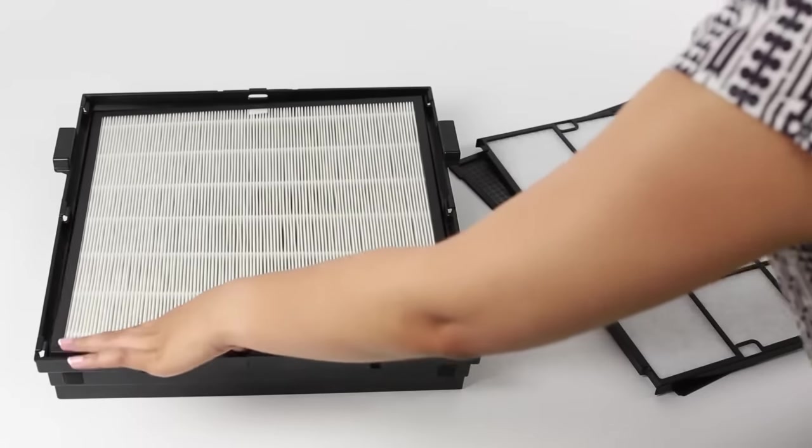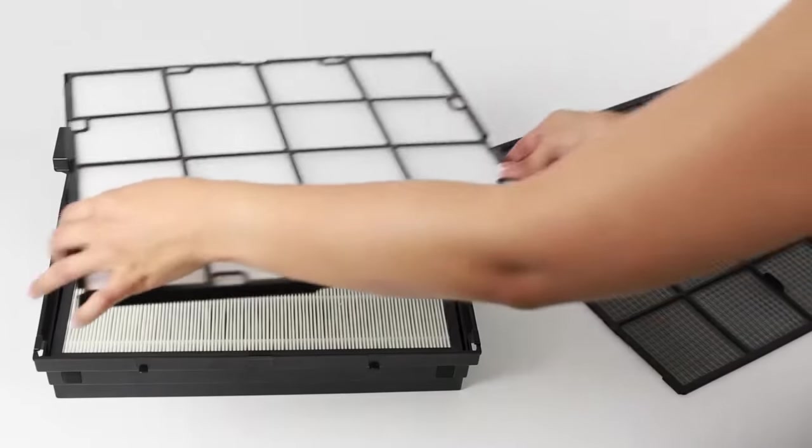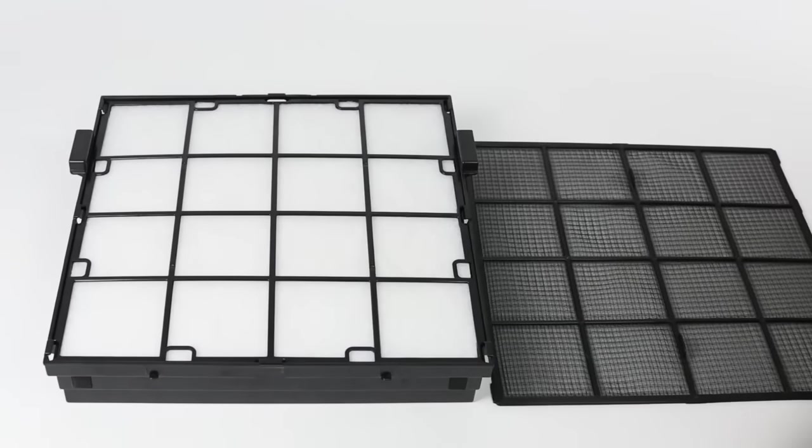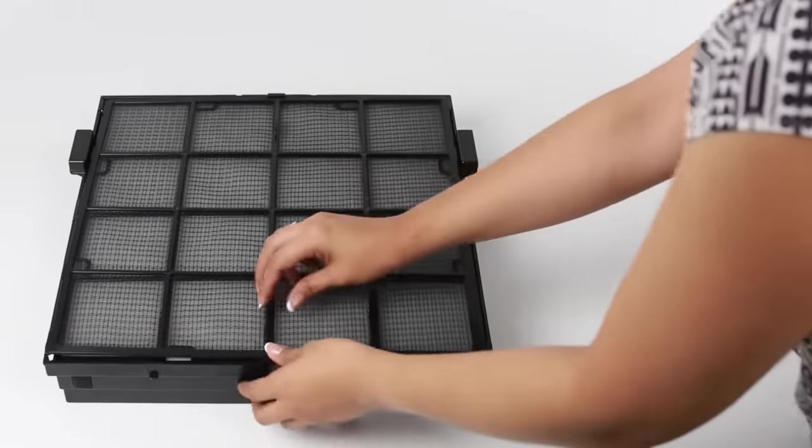The third filter is the HEPA filter. Make sure the side that says front is facing you. The fourth filter is the medium filter. The last filter to go in is the pre-filter. Clip this filter into place with the center tabs facing outward toward you.